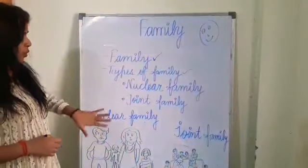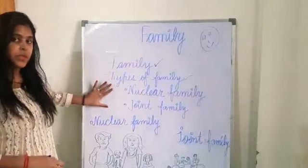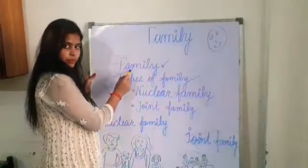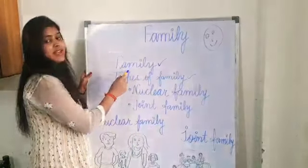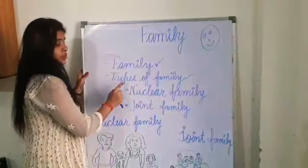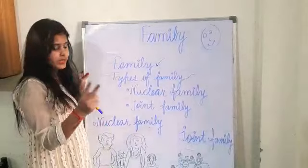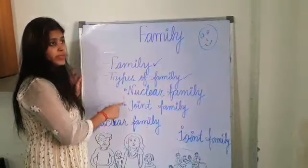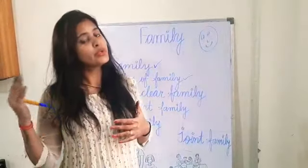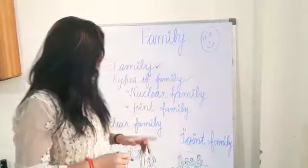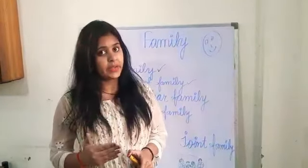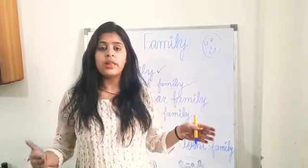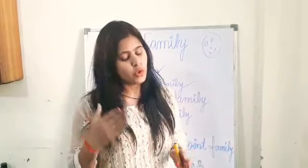Now I hope you all understand the types of family. Let me remind you of all these points once again. Family is a group of people living together, and family is an important unit of the society. There are two types of family: nuclear family and joint family. In a nuclear family, parents live with one or two children. In a joint family, grandparents, parents, children, uncle, aunt, and cousins all live in the same house — it is called joint family.